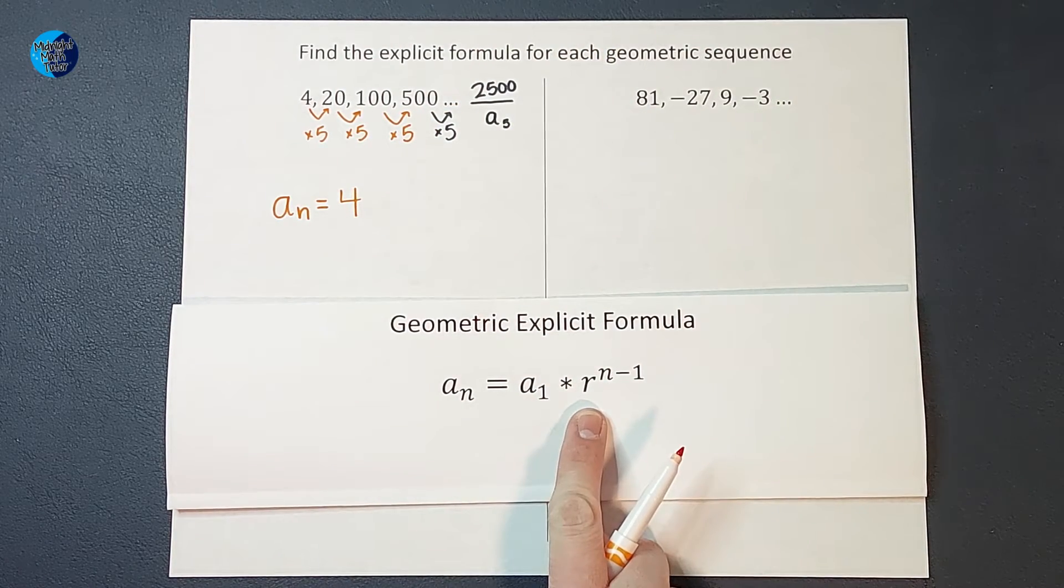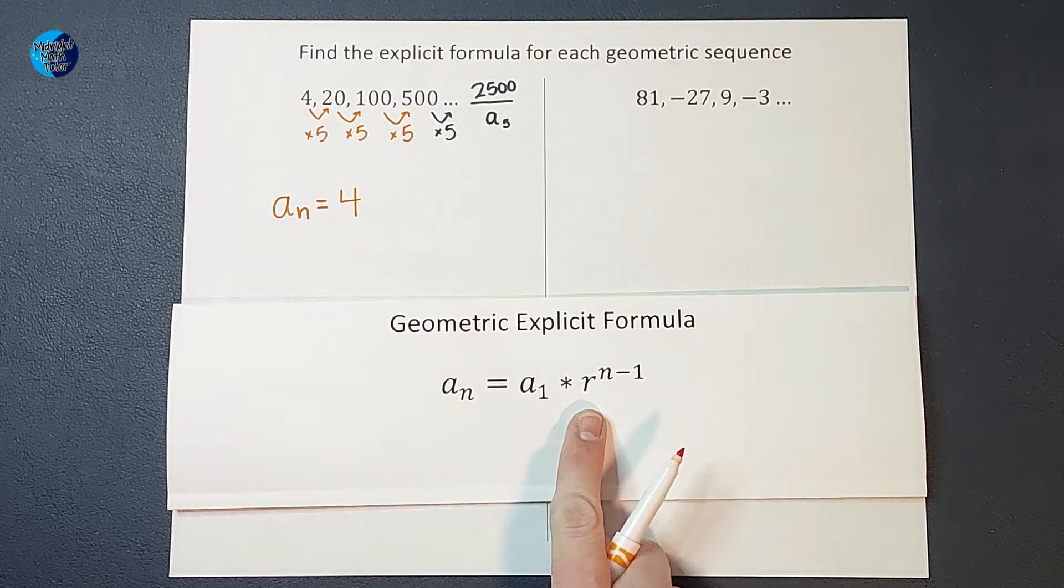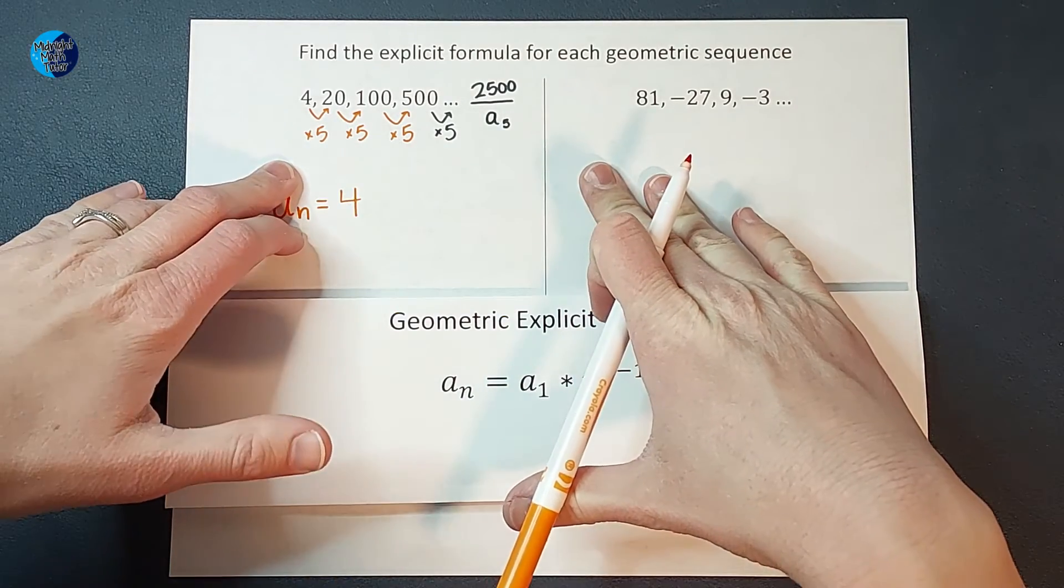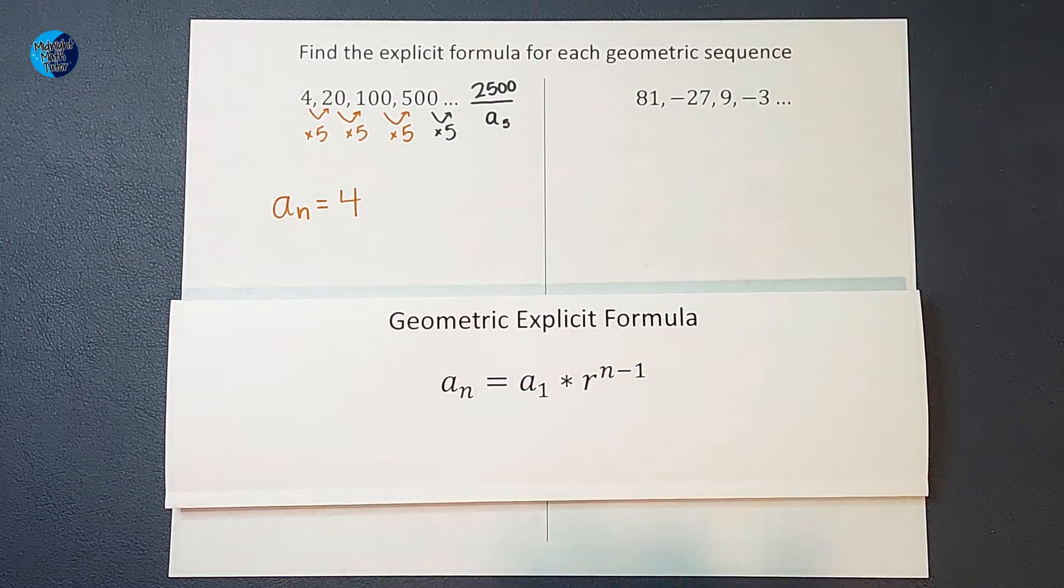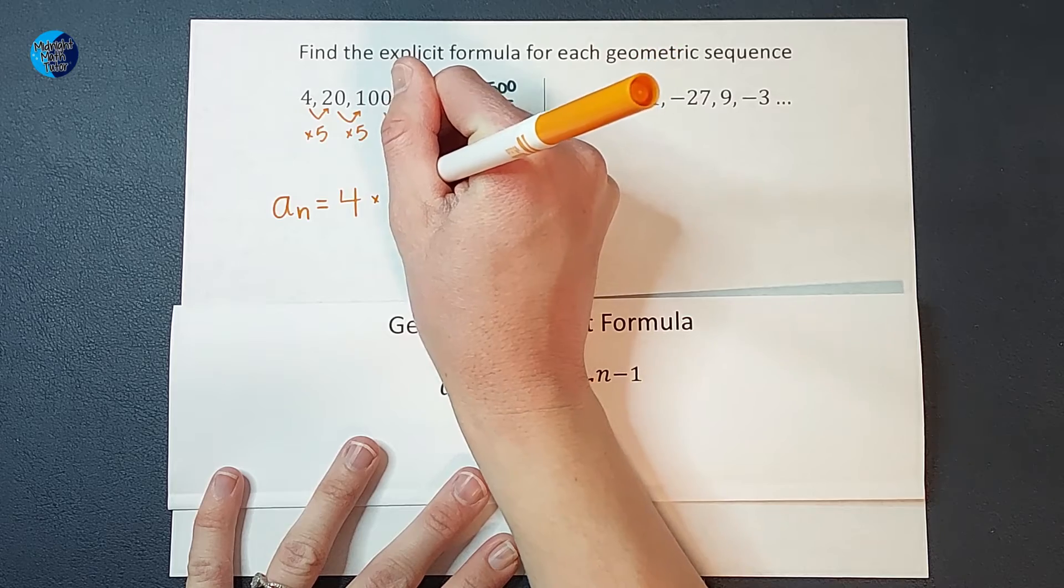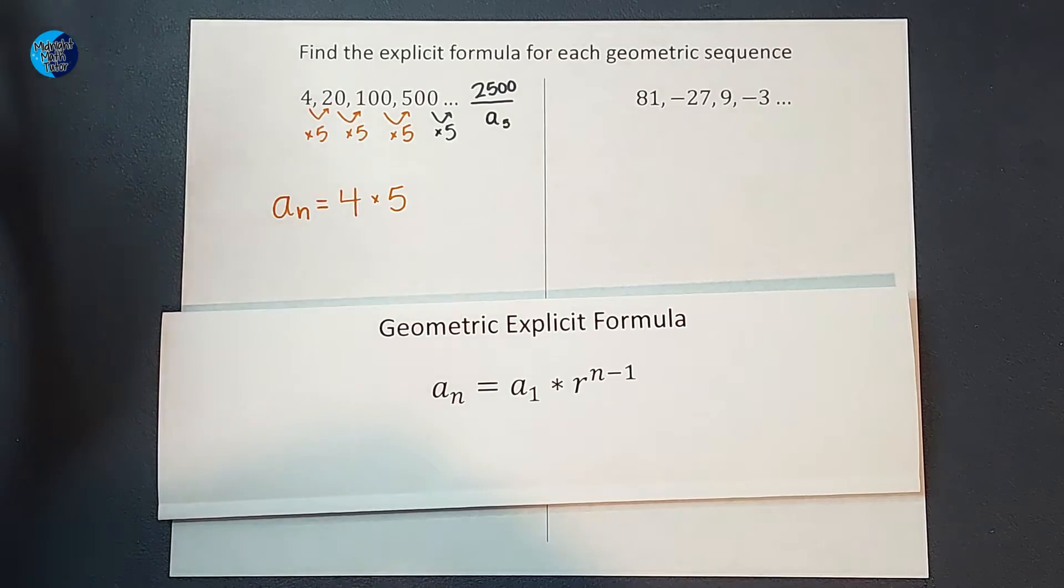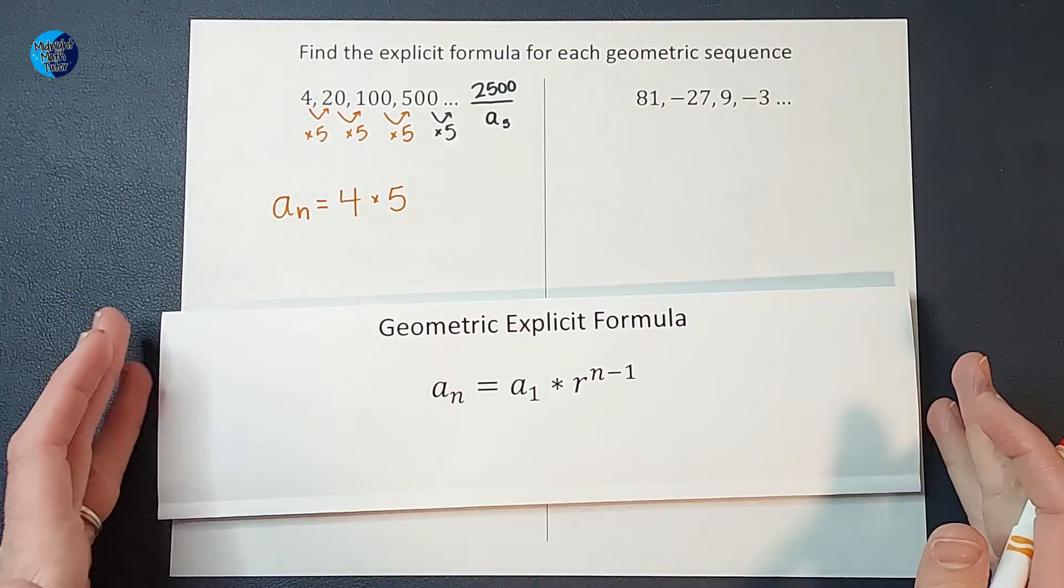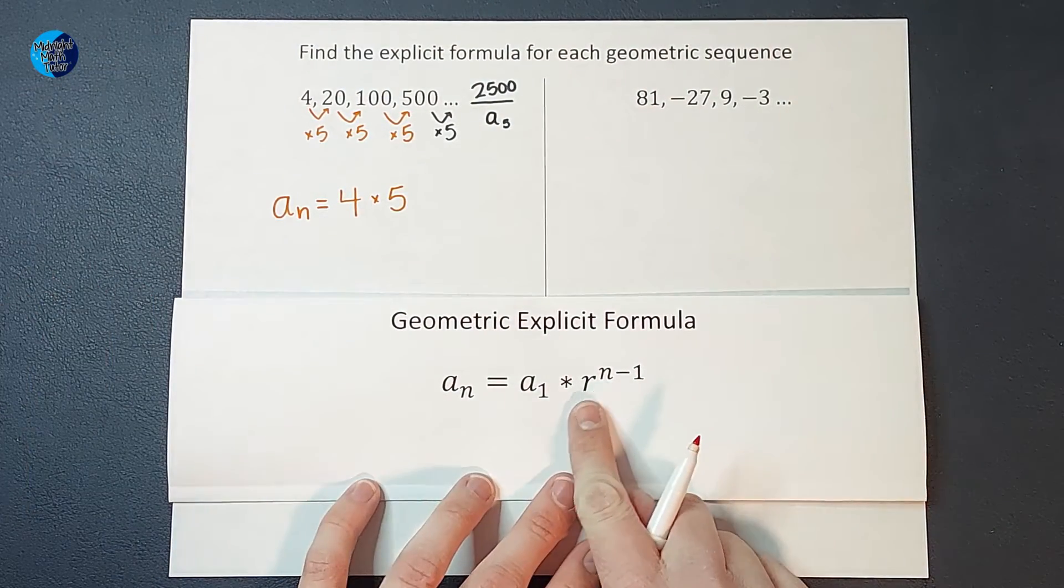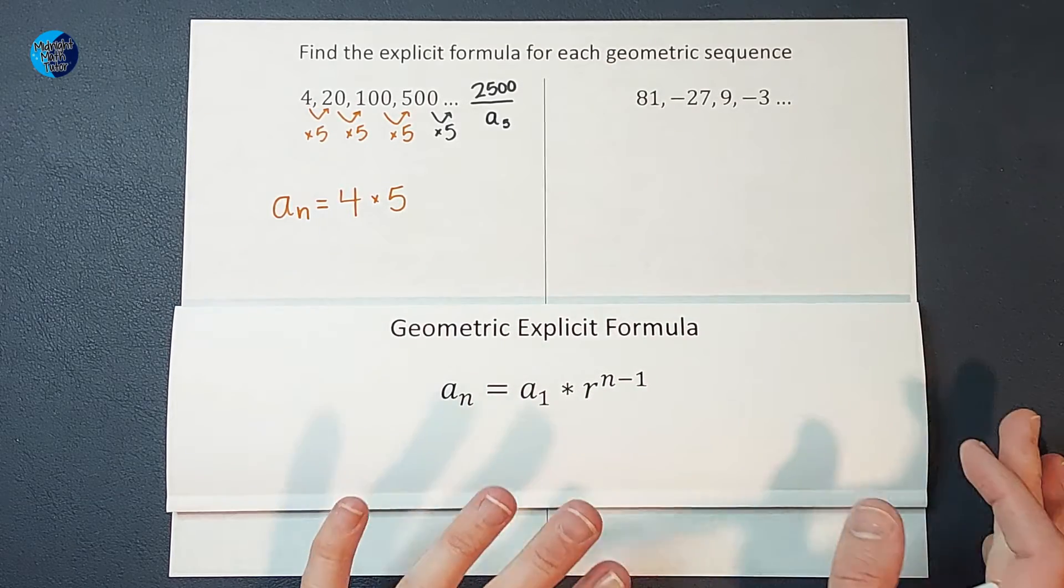Okay, from here, we are multiplying by R. R stands for common ratio, which basically just means what are we doing to it each time? Well, we're multiplying by 5. Okay? So times 5. But not just once, right? That would give me the second number. But what about all these other numbers we want to be able to find? Well, this is where to the power of N minus 1 comes in.